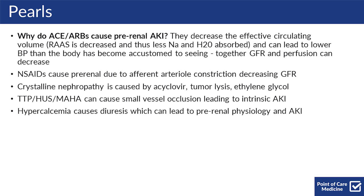Crystalline nephropathy is caused by acyclovir, tumor lysis, and ethylene glycol. TTP, HUS, and MAHA can cause small vessel occlusion which leads to intrinsic AKIs, and hypercalcemia can cause diuresis, which can lead to pre-renal physiology and AKI.